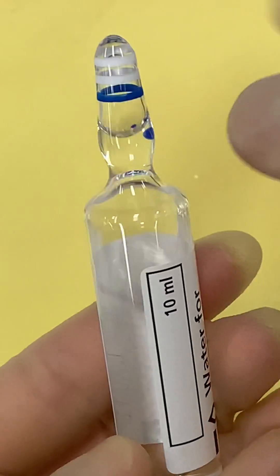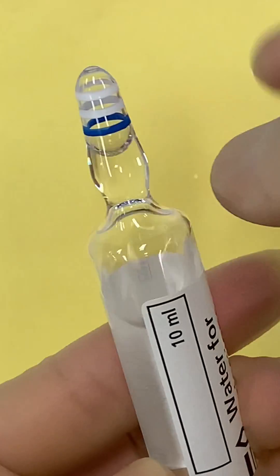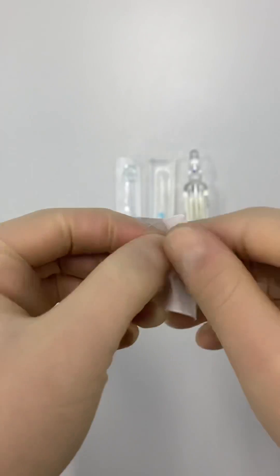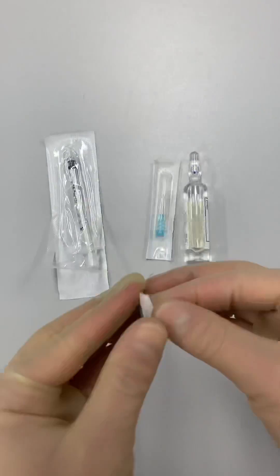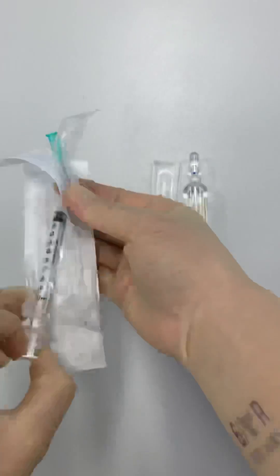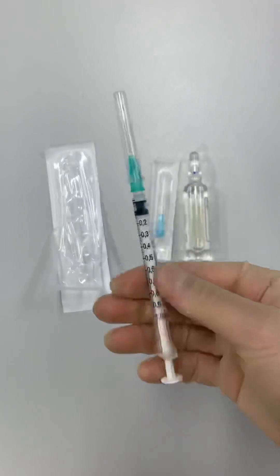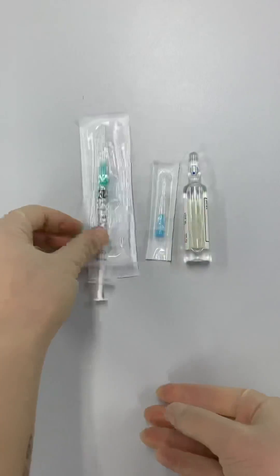Some medications come in glass ampoules and we need to break the ampoule to get the medicine out. But first we need to open the syringe and filter needle and attach them in sterile fashion. The filter needle will prevent any tiny pieces of glass from entering the syringe.